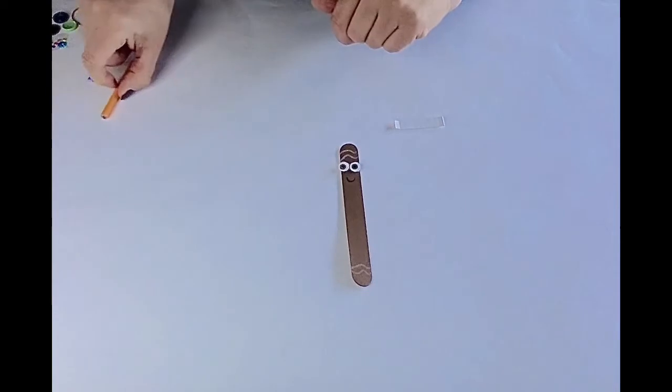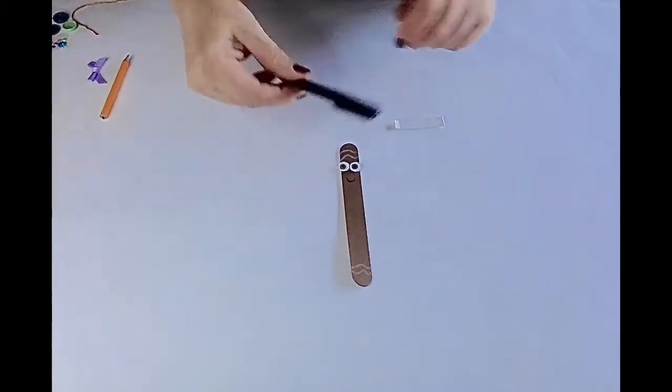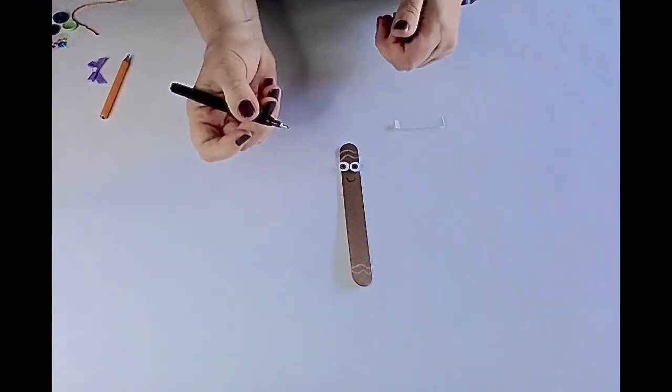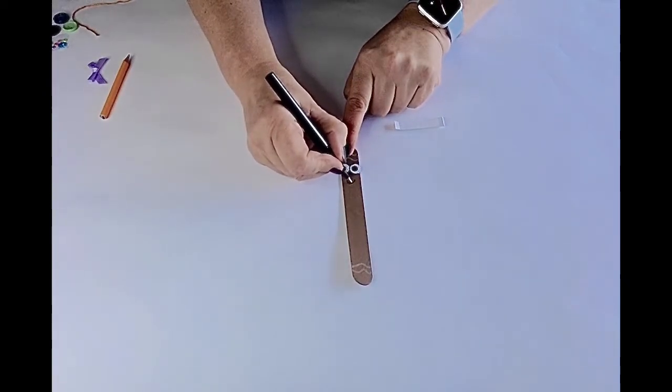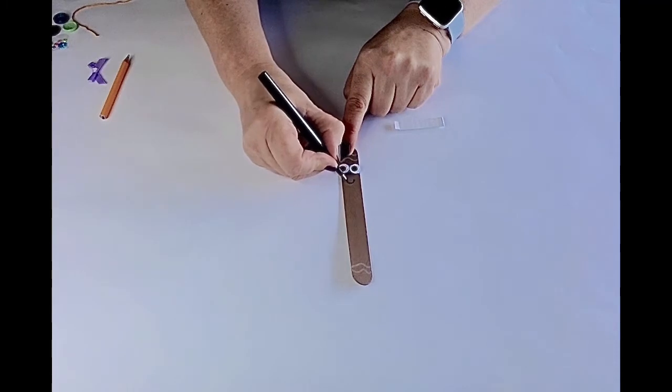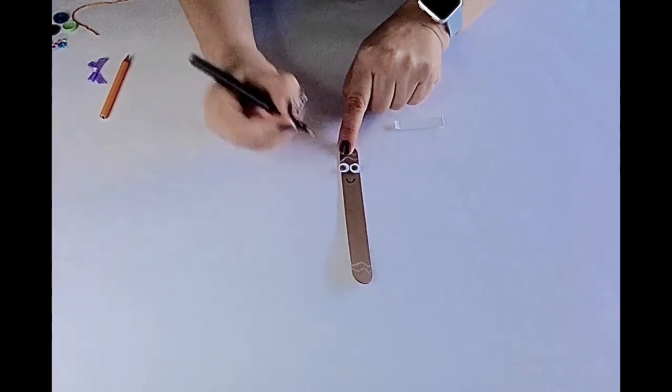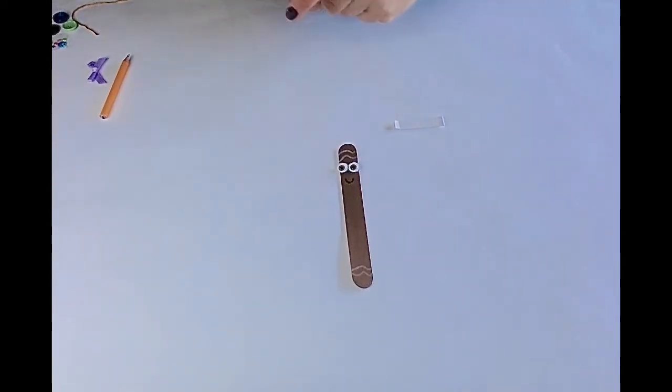Now what you can do if you've got a black felt tip, like I've got one here, you can go over that just to make it stand out but you don't have to. That's why I've put the pencil in so I'll just show you what it looks like with the pen. Okay, so you can make it stand out with a felt tip pen.